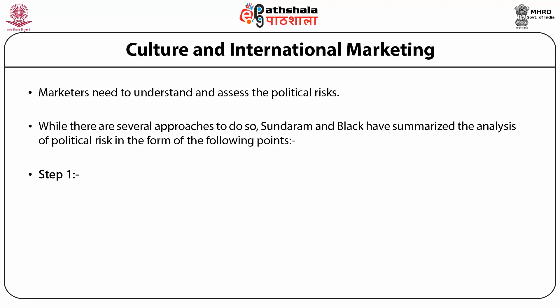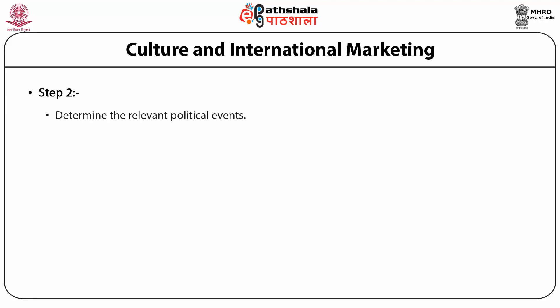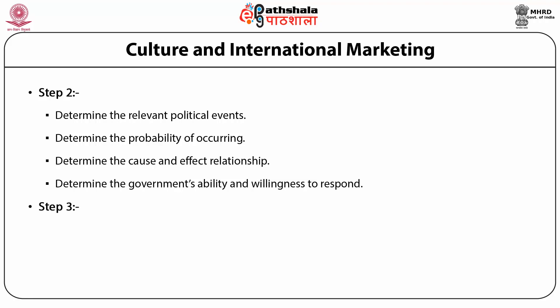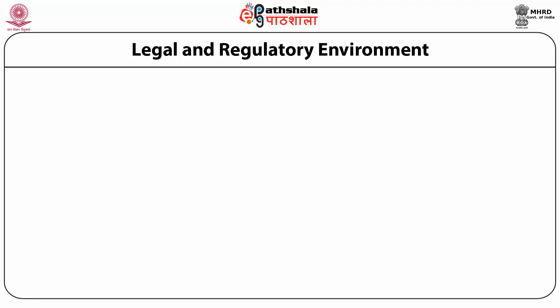In step one, they determine the critical economic or business issues relevant to the firm and assess their relative importance. In step two, they highlight determining the relevant political events that take place in the country, the probability of their occurring, the cause and effect relationship, and the government's ability and willingness to respond to certain events. In step three, they describe determining the initial impact of probable scenarios, the possible responses to initial impacts, and the initial and ultimate political risks.